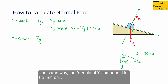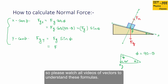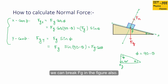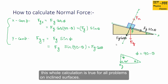The y-component formula is fg·sin(phi), because phi is the angle of force of gravity — we have already learned these formulas for x and y components in the vector series. This gives fg·sin(90 − theta), and since sin(90 − theta) equals cos(theta), the y-component of fg is fg·cos(theta). So the x-component of fg is fg·sin(theta) and the y-component is fg·cos(theta) — you can memorize these two results as they apply to all problems on inclines.